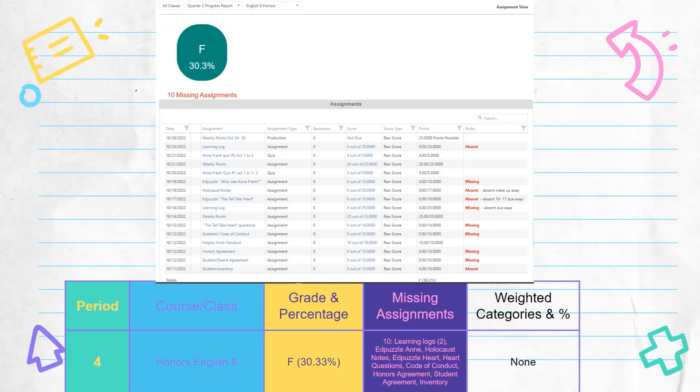Code of conduct, honors agreement, student agreement, and inventory. You want to be as detailed as possible so that you can talk to your teachers and you know exactly this is what I'm missing. Can I turn it in? Looks like the student was maybe absent and missed some assignments. I'm sure most of your teachers have policies for late work or absent work that needs to be turned in.